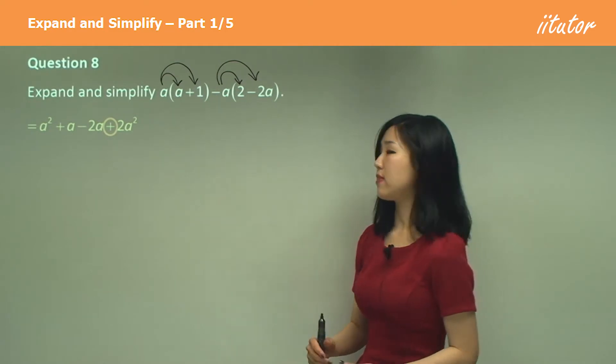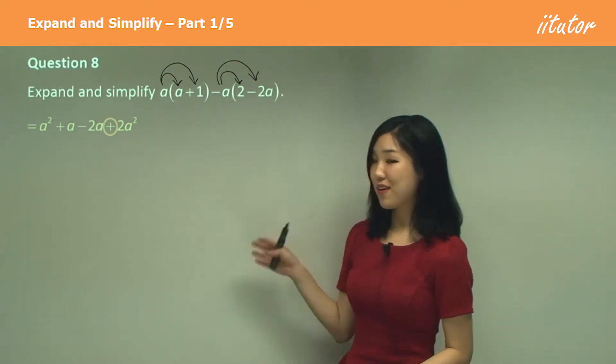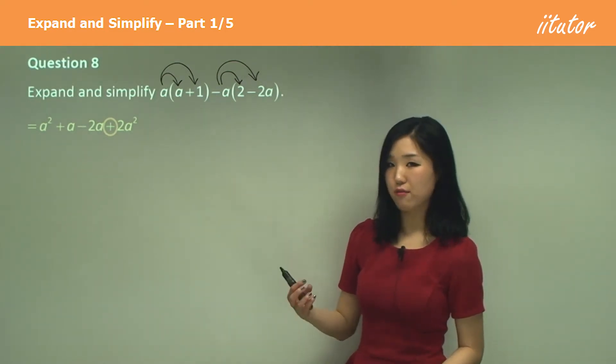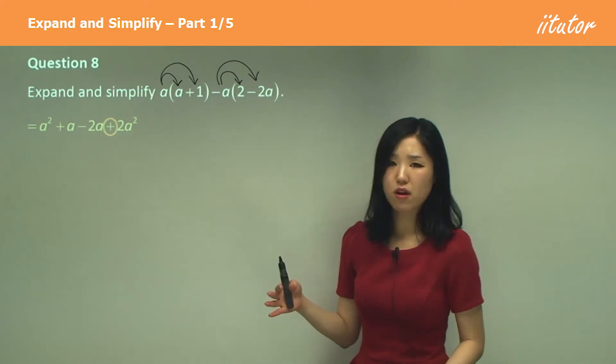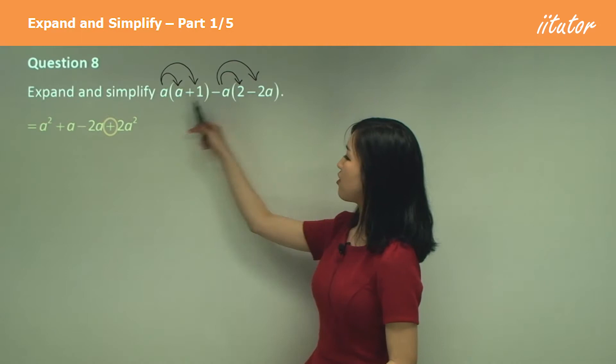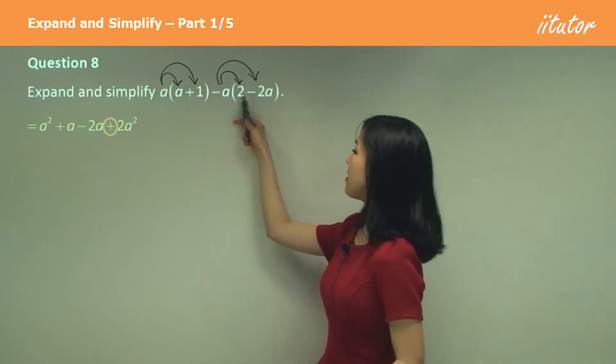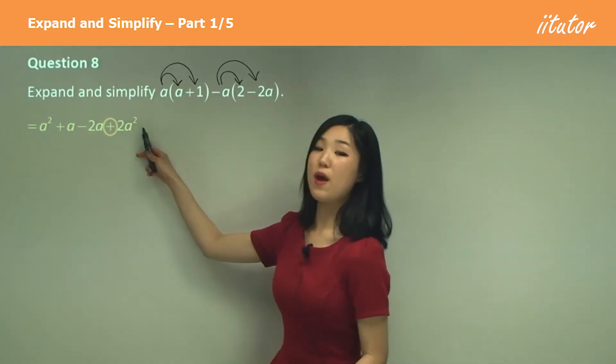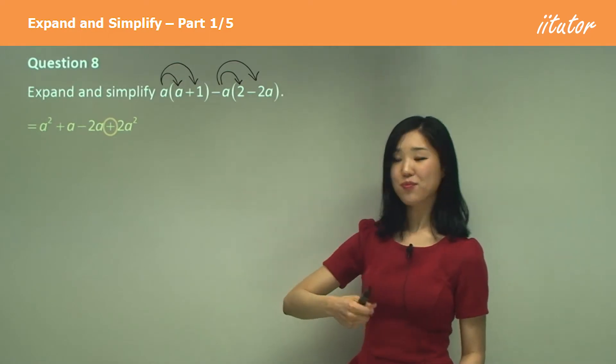So every time you get a question like this be extra careful. Some people just put a negative in front for some reason because they forget. So here negative negative makes a positive and then a times 2a is 2a squared.